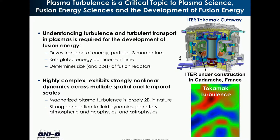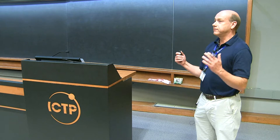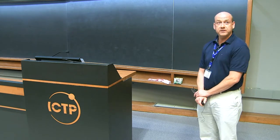So why do we care about turbulence? It turns out that it's a critical issue for the development of fusion energy, which has been a goal for many scientists for a long time. It's a very fundamental and basic topic to plasma science, fusion energy sciences, and ultimately the development of fusion energy. Turbulence drives radial cross-field transport of particles, energy, and momentum across the magnetically confining surfaces.